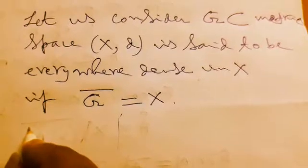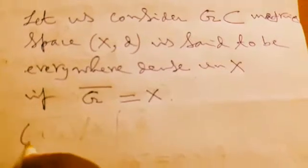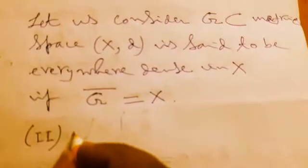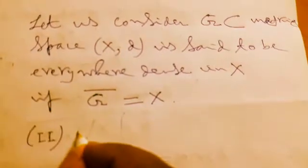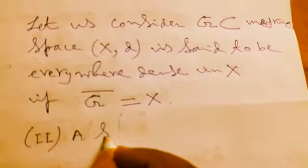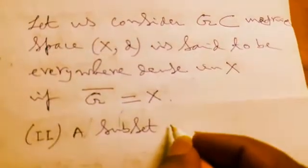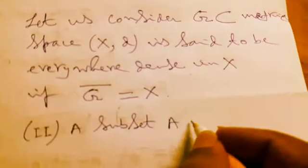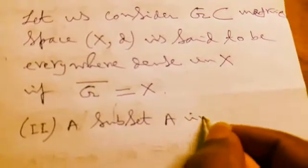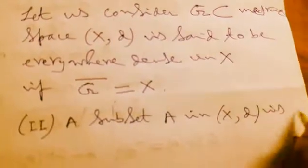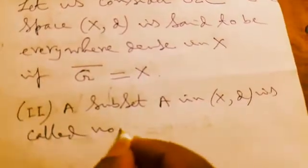if we consider it as case number 2, a subset A in X,d metric space is nowhere dense, or is called nowhere dense,